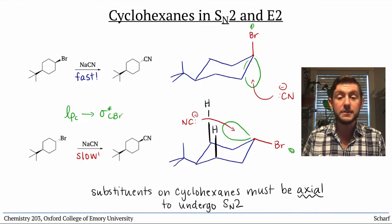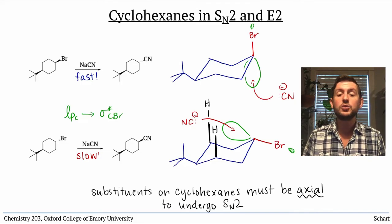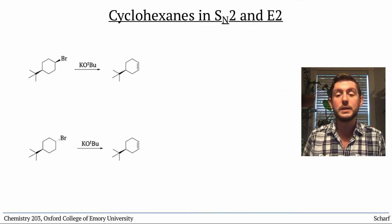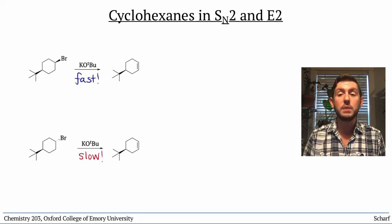We see a similar difference in reactivity if we try to perform E2 elimination on our two substrates. The first isomer undergoes elimination quickly, while the second is much slower.